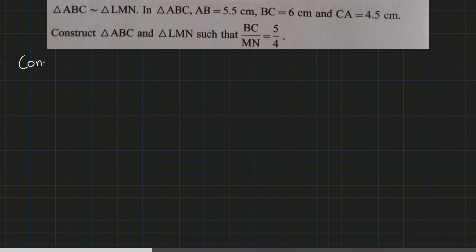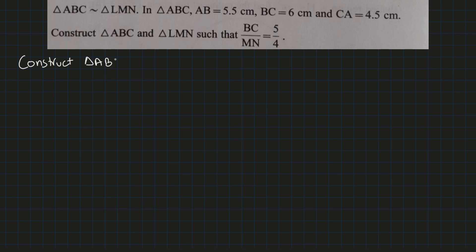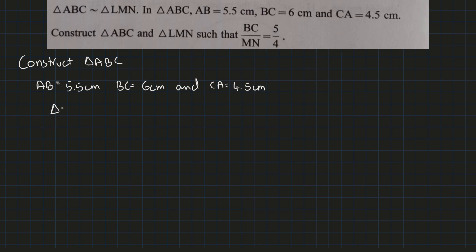Construct triangle ABC and triangle LMN. Triangle ABC is congruent to triangle LMN, and we have been given the sides of triangle ABC. We need to construct both the triangles. With the help of triangle ABC, that is, the sides given, we can find the sides of triangle LMN. Since triangle ABC is congruent to triangle LMN, we can write the corresponding sides of both the triangles.